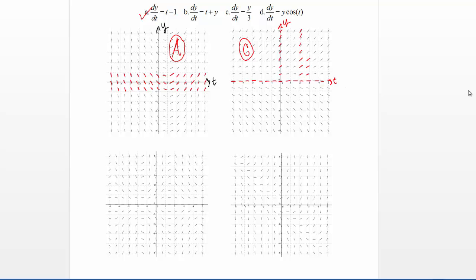Now I'm left with B and D, and now both of these include both a t and a y, and I have two direction fields left. Let's maybe look at the direction fields themselves, and see if either one of them has a feature that stands out to us that we could use to try and distinguish between these differential equations.